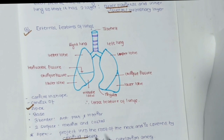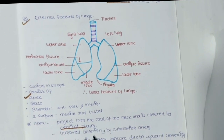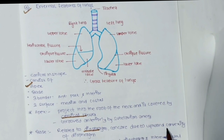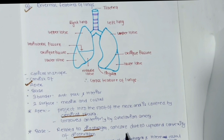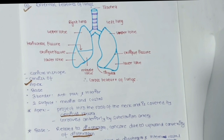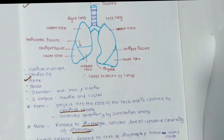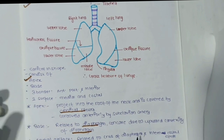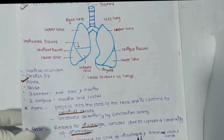At its apex, the lung projects into the root of the neck and is covered by the cervical pleura. It is grooved anteriorly by the subclavian artery. The base is downward and related to the diaphragm — concave due to the upward convexity of the diaphragm. The costal surface is related to the ribs and intercostal spaces. The medial surface contains the hilum of the lungs.